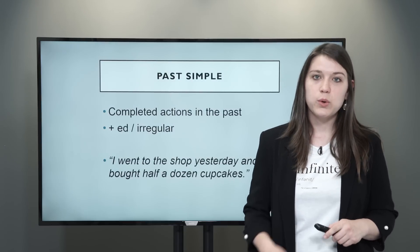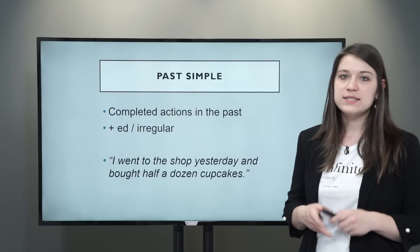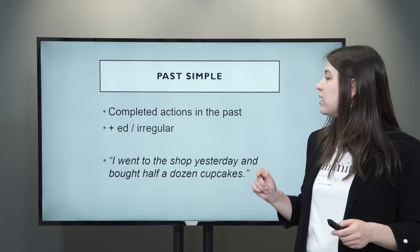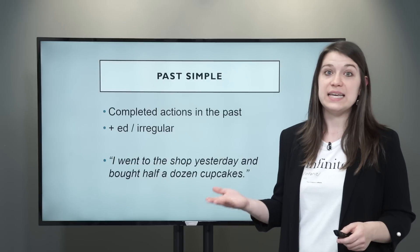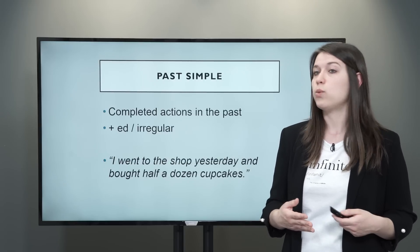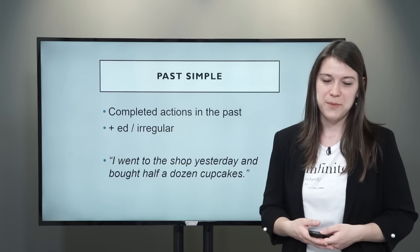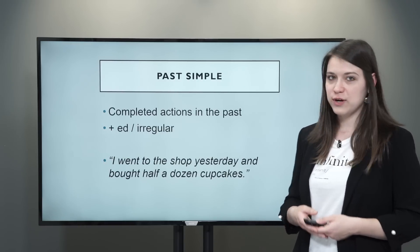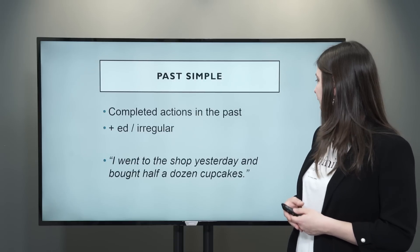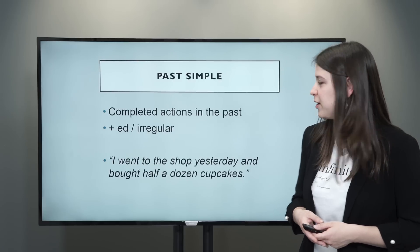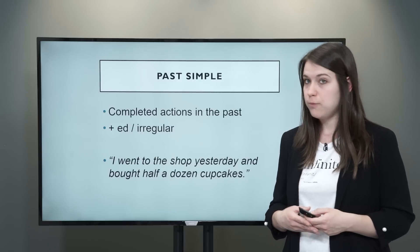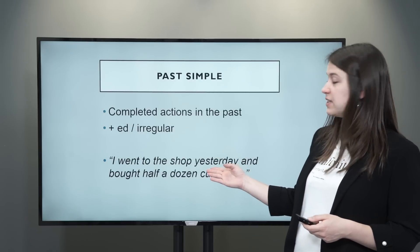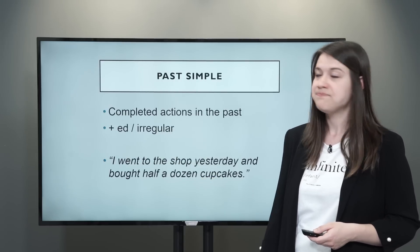The first past tense we're going to talk about is the past simple — these are completed actions in the past, things that are finished. If the verb is regular, we simply add the ending -ed. If it is irregular, we have to memorize the verb form. For example: I went to the shop yesterday and bought half a dozen cupcakes. The verb to go is irregular, so the past simple is went. The verb to buy is also irregular — the past simple is bought.